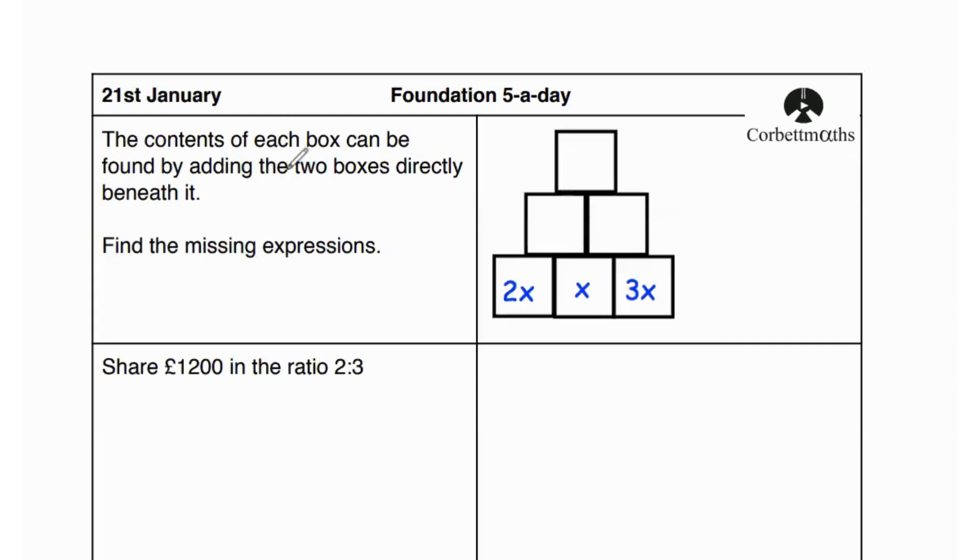First question says the contents of each box is going to be found by adding the two boxes directly. Find the missing expressions. So let's begin with adding these two boxes, which is going to give us 3x over here.